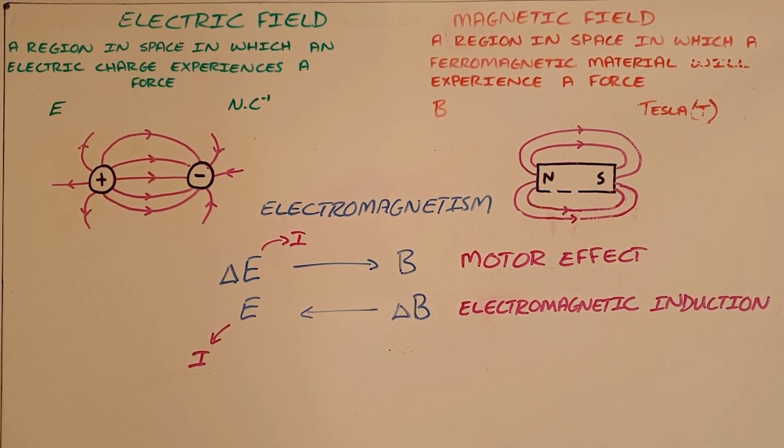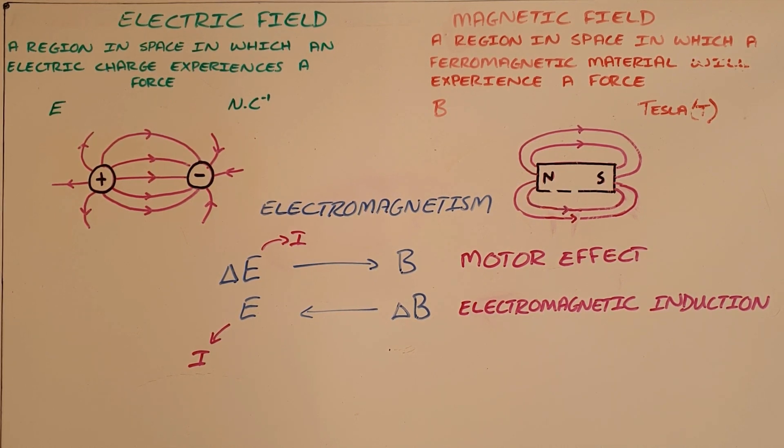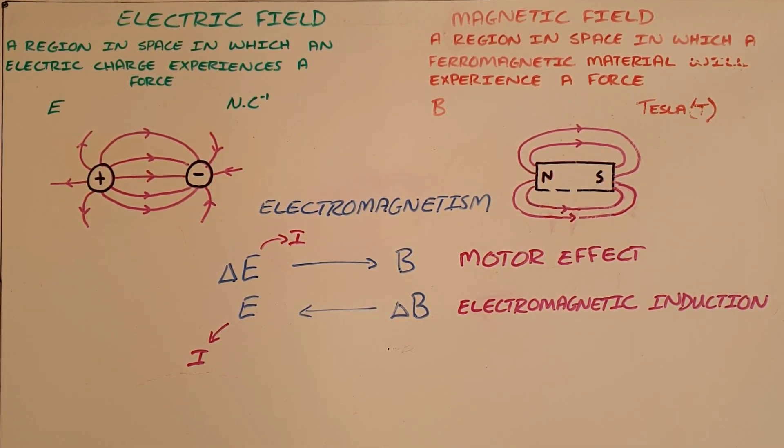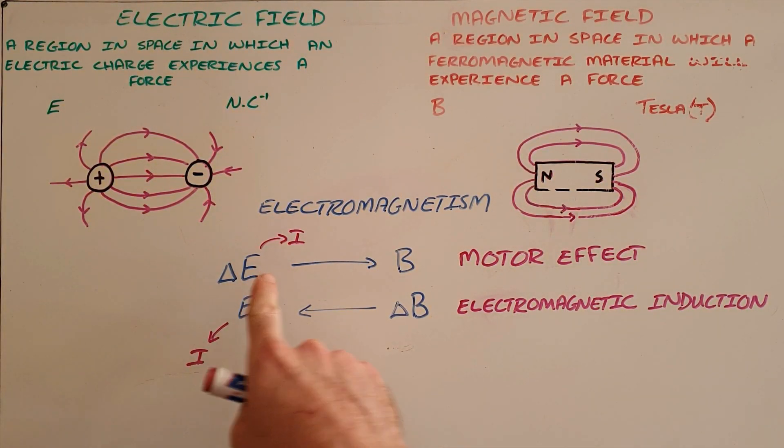So once again, electric and magnetic fields are seen as two sides of the same coin, where a changing electric field in the form of a current can produce a magnetic field that can be used to create mechanical energy or movement, and the converse of that being that a changing magnetic field in the form of a moving magnet can create an electric field, which can in turn induce a current, which is known as electromagnetic induction.